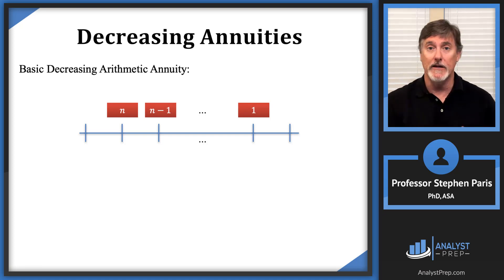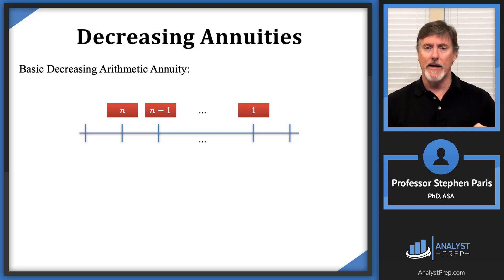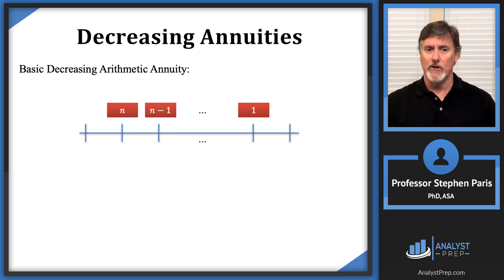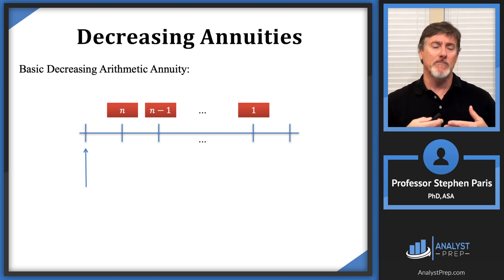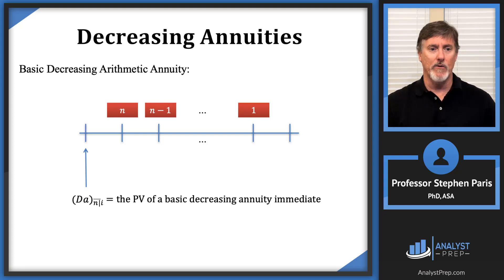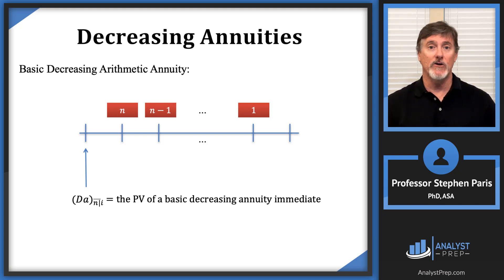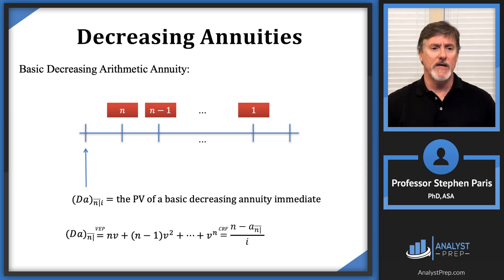Remember when we had the arithmetically increasing annuity, we used something like cap IA or cap IA double-dot and so forth. If I take the valuation date one period before the first payment, I'm going to symbolically represent the value of the annuity at that date with a cap D because it's decreasing — so cap DA angle N. That would be the present value of this basic decreasing annuity immediate.